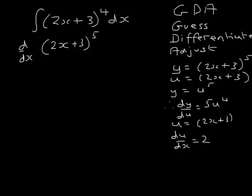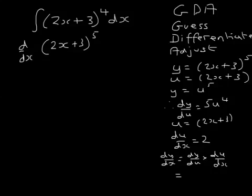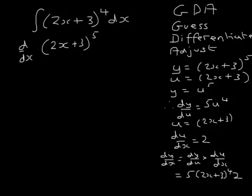We want dy/dx. dy/dx is dy/du multiplied by du/dx. So dy/du is 5u to the power of 4, that's 5(2x + 3) to the power of 4, times du/dx, which is multiplied by 2. So 5 times 2 is clearly 10, and I can write this as 10 lots of (2x + 3) to the power of 4.